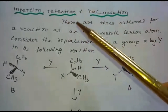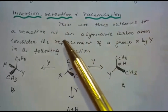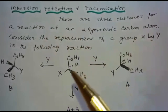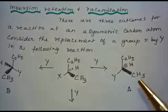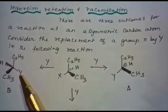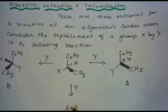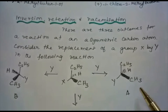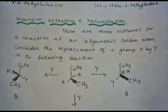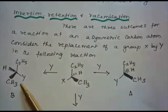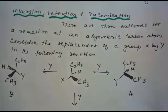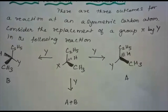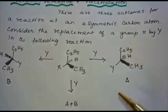There are three possible outcomes for a reaction at an asymmetric carbon atom when group X is replaced by Y. First, if product A is the only compound formed, the process is called retention of configuration. Second, if product B is the only compound formed, the process is called inversion of configuration. Third, if a 50:50 mixture of both is obtained, the process is called racemization, and the product is optically inactive as one isomer rotates light in the direction opposite to the other.